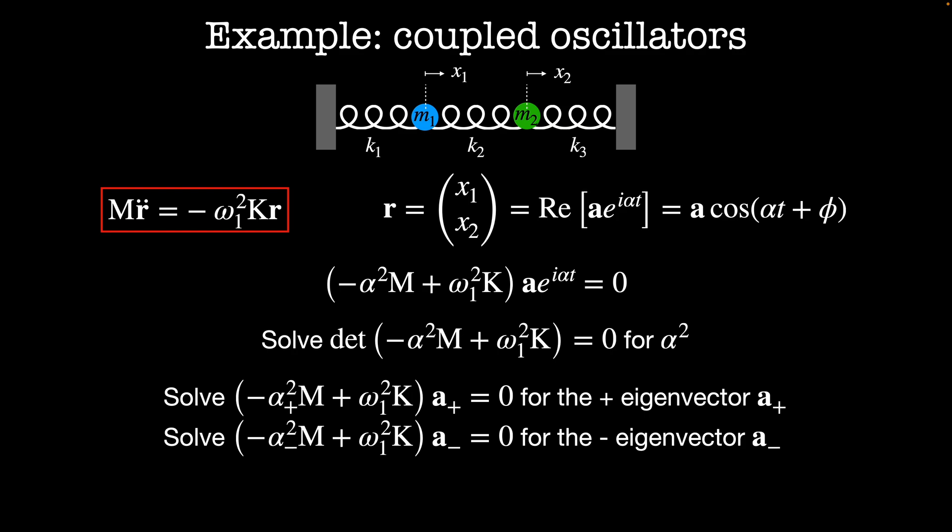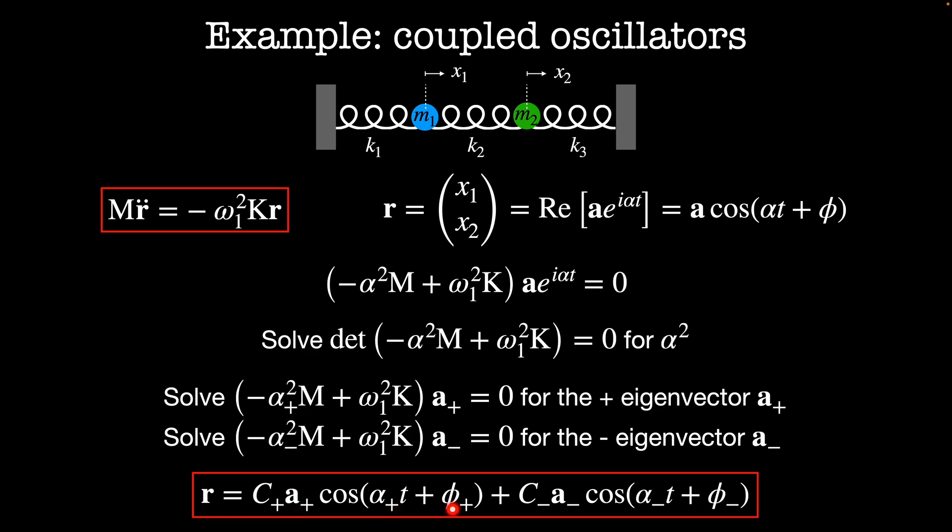So this gives us two solutions to our second order equation. The full solution is going to be a linear combination of these. So that's going to be some constant c plus times the vector a plus cosine alpha plus t plus phi plus plus the constant c minus times the vector a minus times cosine alpha minus t plus phi minus. This is a second ordered set of coupled equations in two variables. So that means we need four initial conditions to specify things and there are four corresponding unknowns in this equation. Those are going to be the constant c plus and phi plus c minus and phi minus.